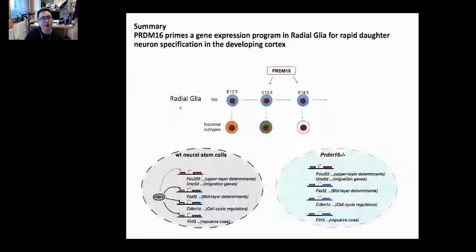To summarize, we propose that in wild-type radial glia, PRDM16 binds and represses a subset of genes so that it can establish a new gene expression program in radial glia to produce and help the migration of upper layer neurons. However, when you remove PRDM16, the entire gene expression program becomes masked, so you see the phenotype.